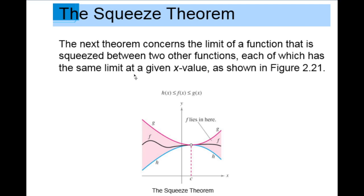So if we do not know how to calculate the limit of f of x at c, what we need to do is find two functions h of x and g of x, of which h of x is always below f of x and g of x is always above f of x.